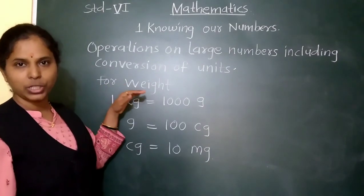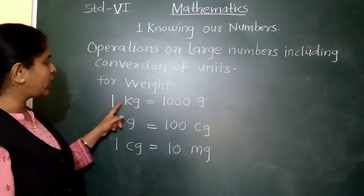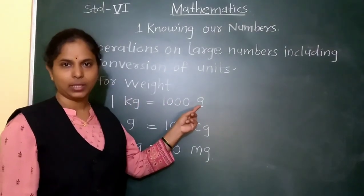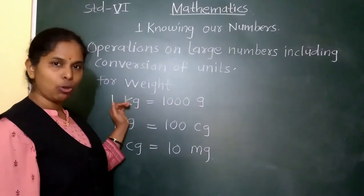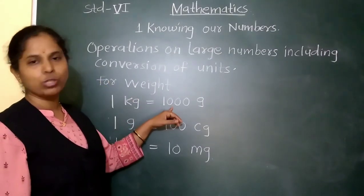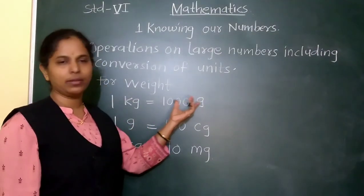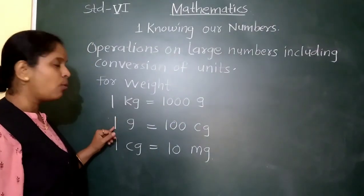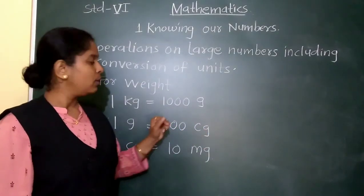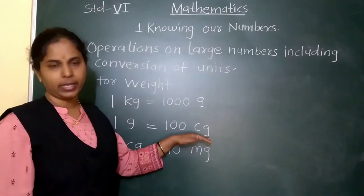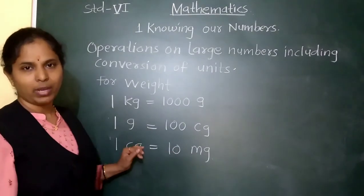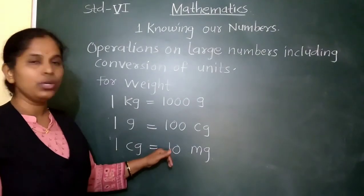Now we will see the conversion of weight. 1 kg means kilogram, and 1 kilogram is equal to 1000 grams. Next, 1 gram is equal to 100 centigrams. And then, 1 centigram is equal to 10 milligrams.